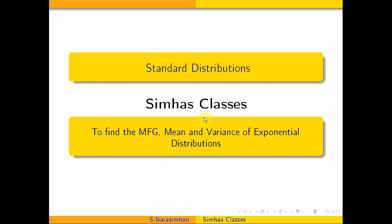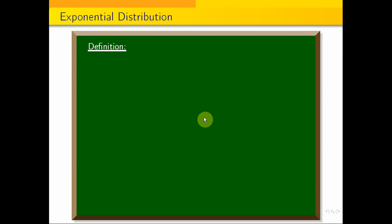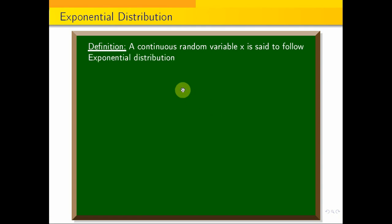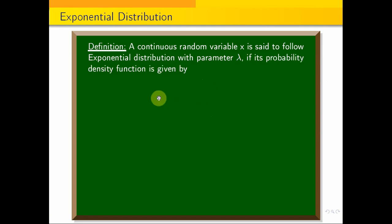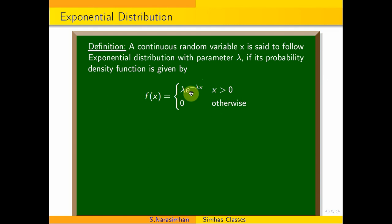Exponential distribution — PDF, Mean, Variance. How do we define exponential distribution? A continuous random variable x is said to follow exponential distribution with parameter lambda if its probability density function is given by f(x) = lambda · e^(−lambda · x) when x > 0, and 0 otherwise.